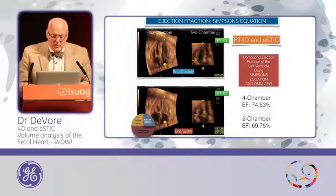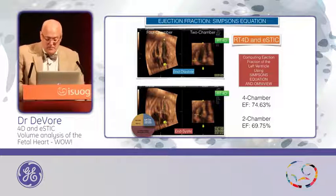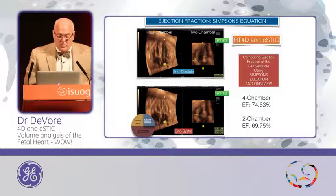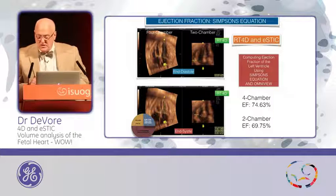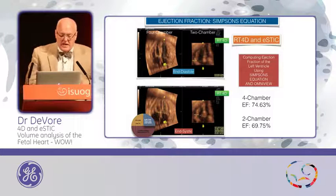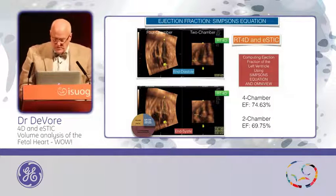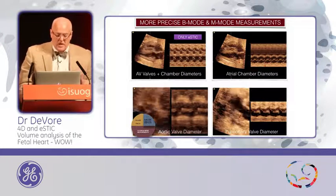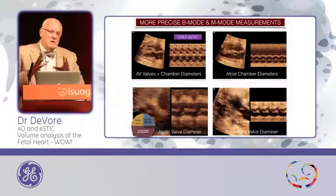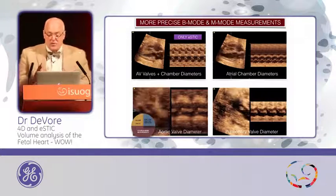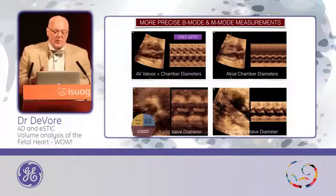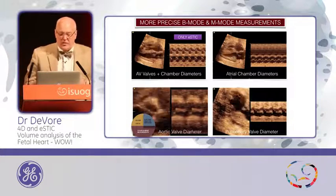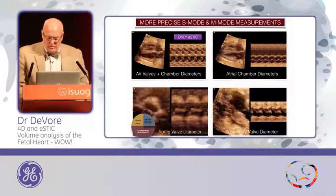Using OmniView, we can draw a line down the left ventricular chamber to see the two-chamber view, and the software has Simpson's Rule, allowing us to trace the ventricles and compute ejection fraction in a much more precise fashion. Using E-STIC with M-mode, I have the ability to display the M-mode on the right, and for measurement purposes you're going to be much more accurate determining end-diastolic and end-systolic values for the various chambers.